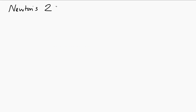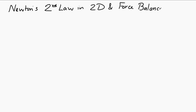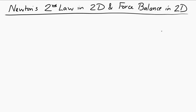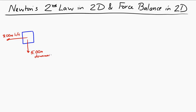Let's take a look at Newton's second law in two dimensions and balance of forces in two dimensions. We'll start with an example. Let's say that we have an object and we know two of the forces acting on it: eight Newtons to the left and five Newtons downward. The question is, how could we make the forces balanced in this situation?